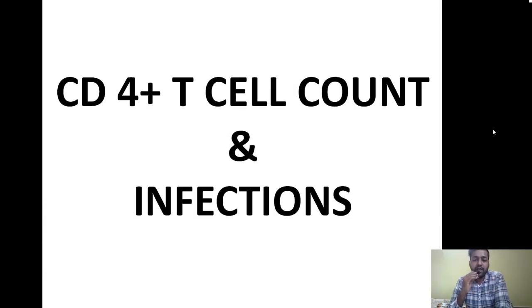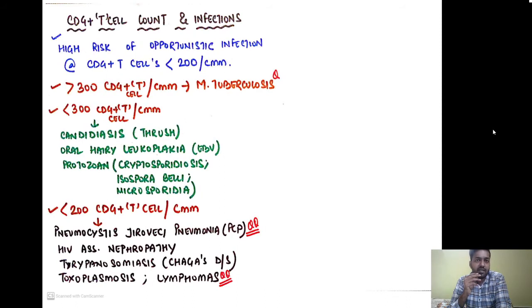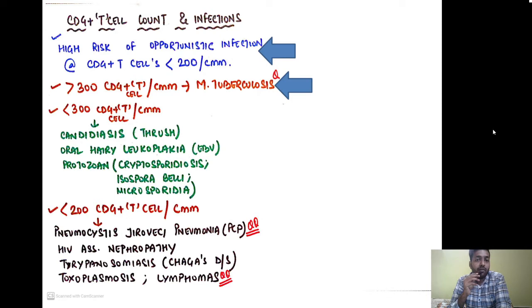An important topic is the association between CD4+ T cell count and infections. There is a very high risk of opportunistic infection when the count falls below 200 per cubic millimeter. When the count is more than 300, there is high risk of typical mycobacterial infection — Mycobacterium tuberculosis. When the count is less than 300, there is increased risk of candidiasis — oral thrush — oral hairy leukoplakia caused by EBV, and protozoan infections by Cryptosporidium, Isospora belli, and Microsporidia.